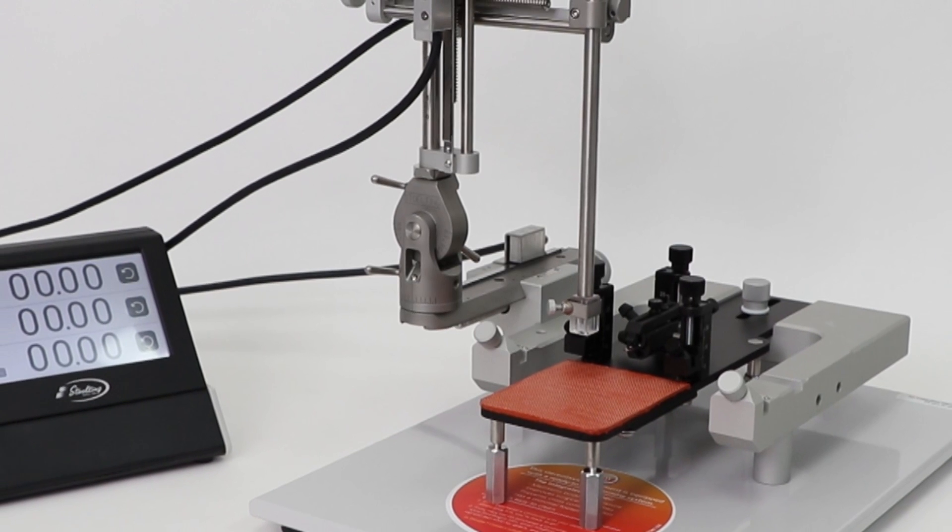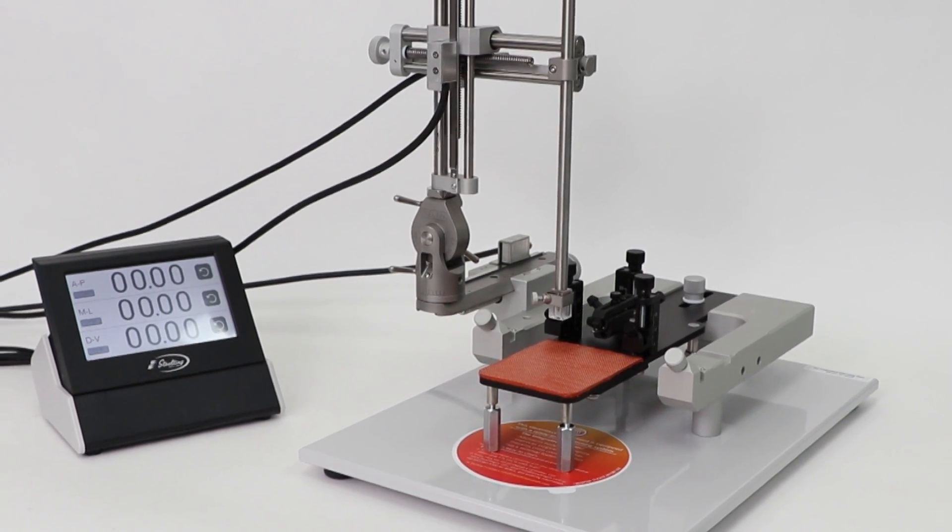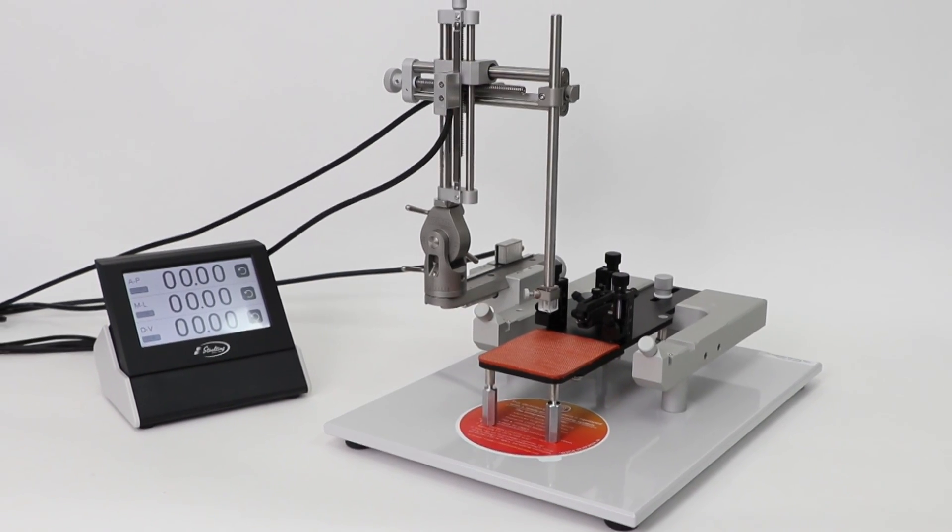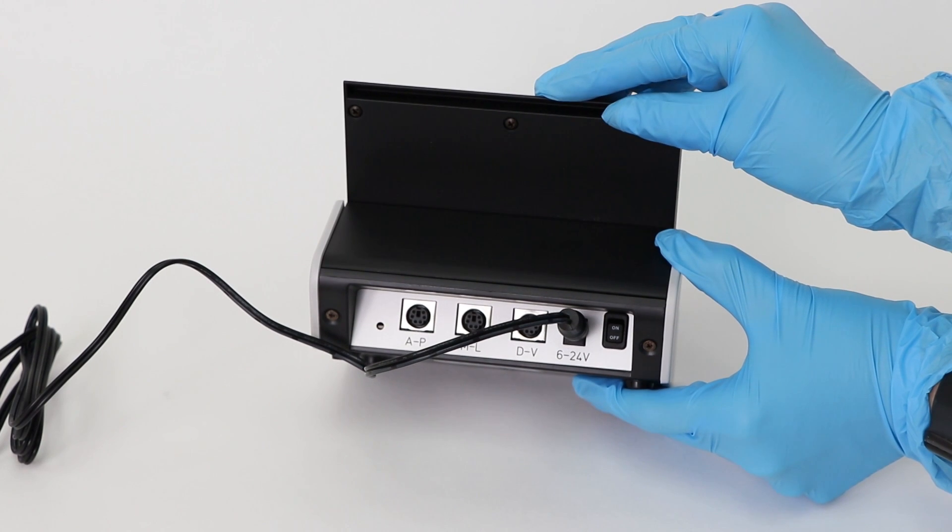Let's take a look at how to set up a digital rat mouse neonatal rat stereotaxic frame. In a few steps you will be up and running. First, plug in the power cable to the digital display.